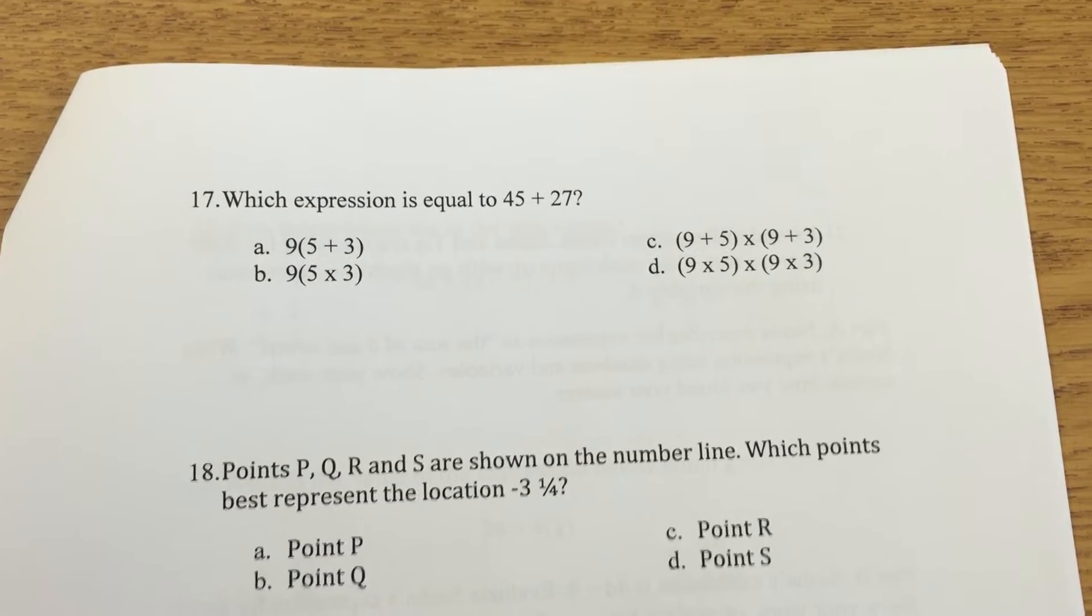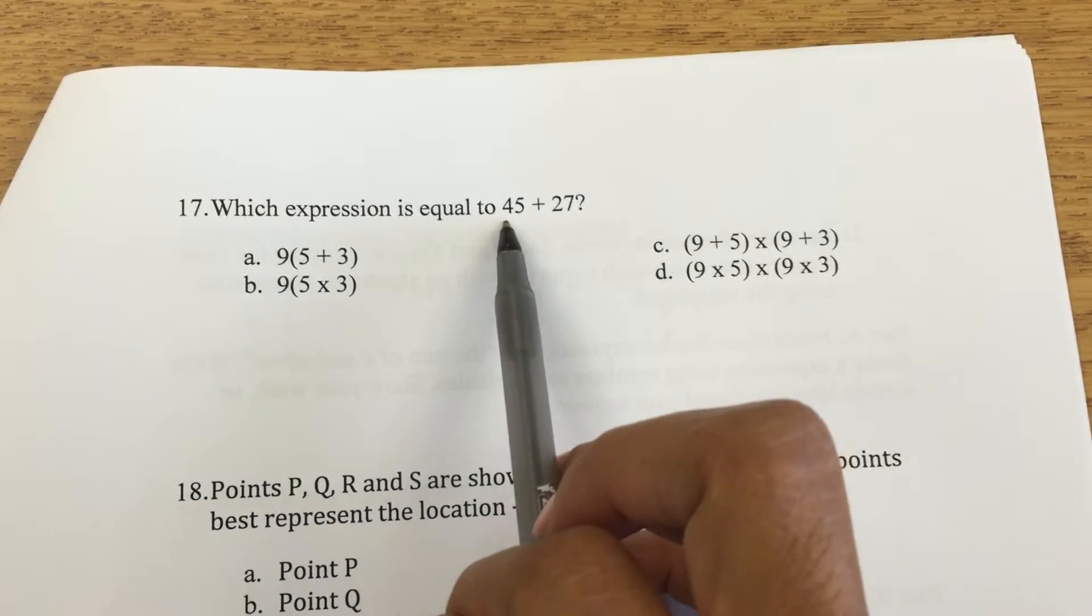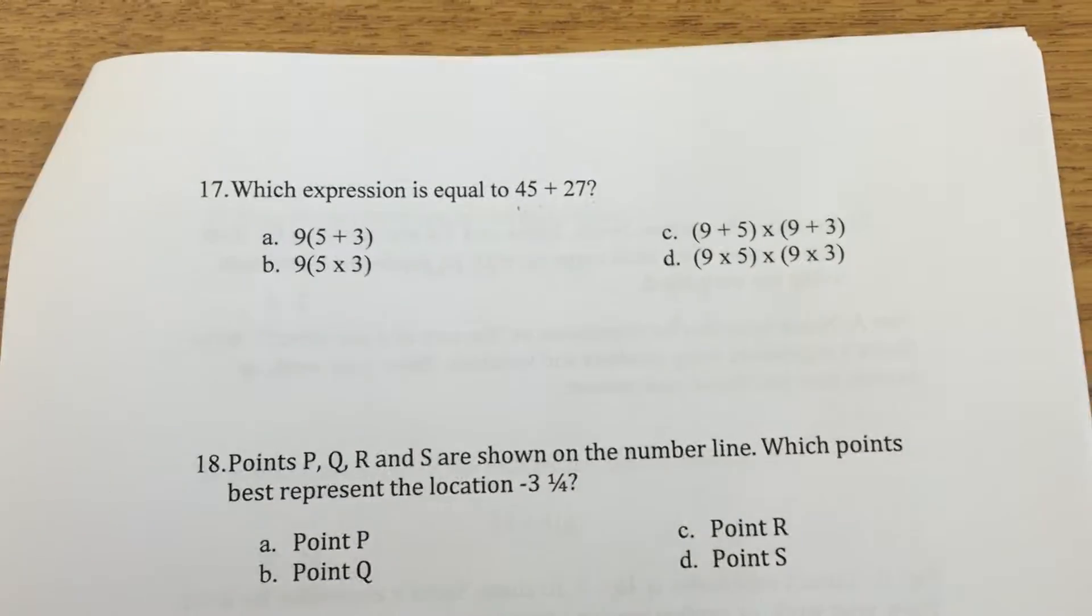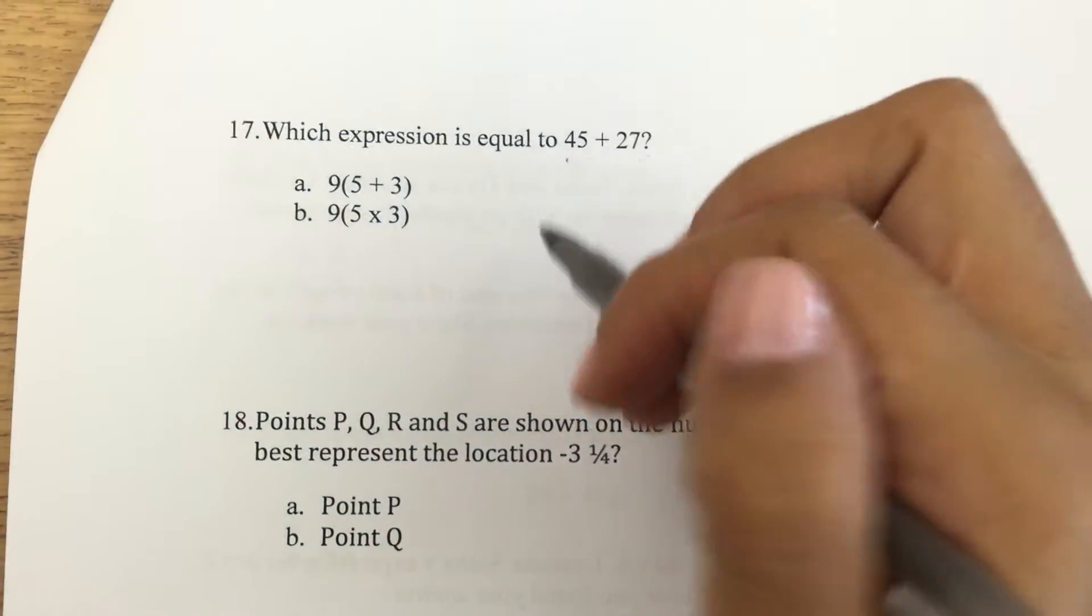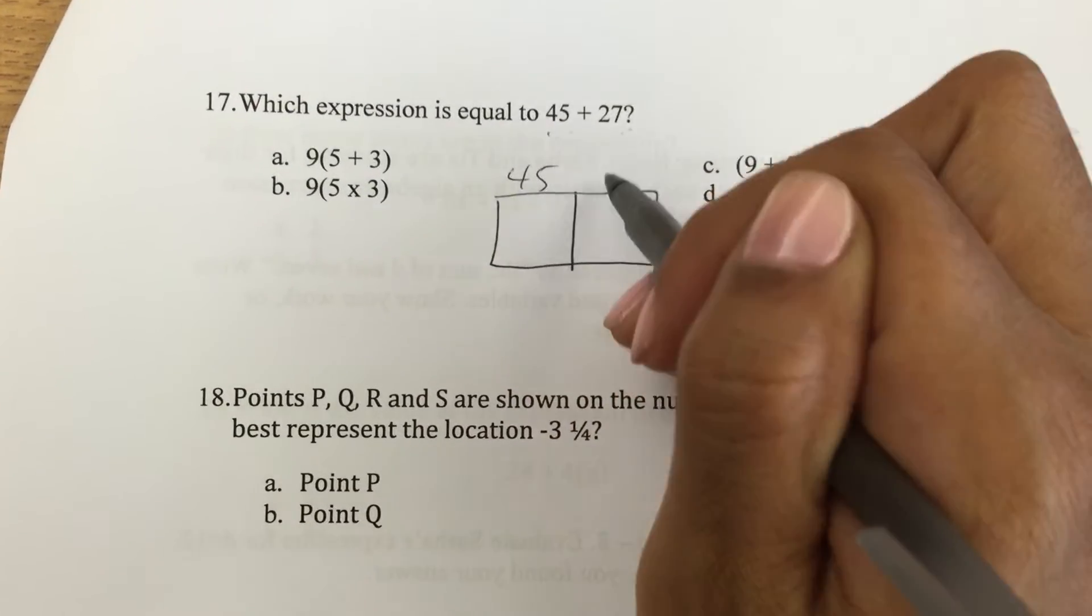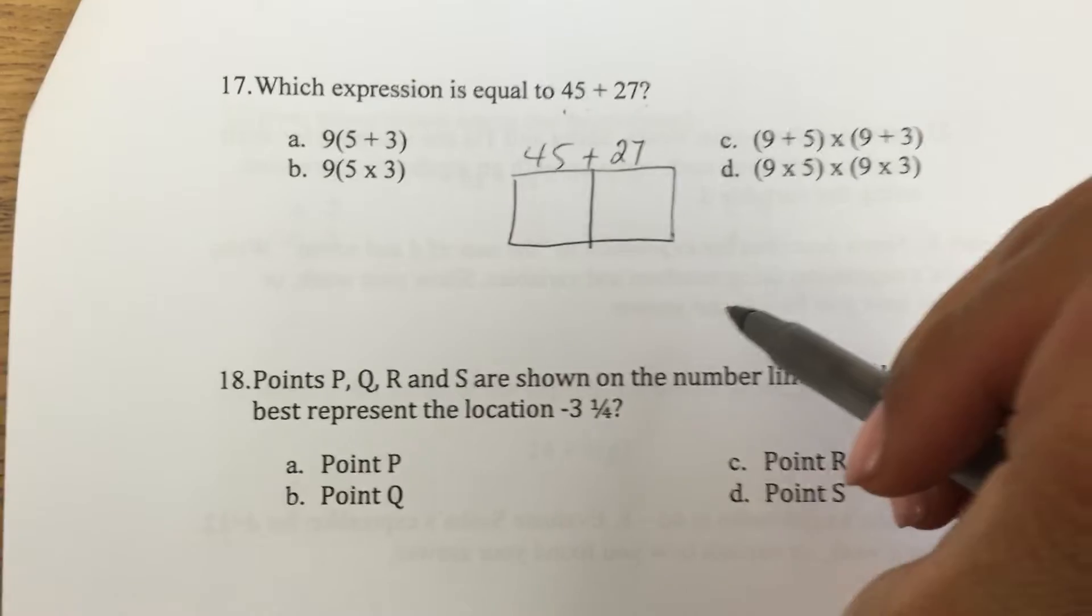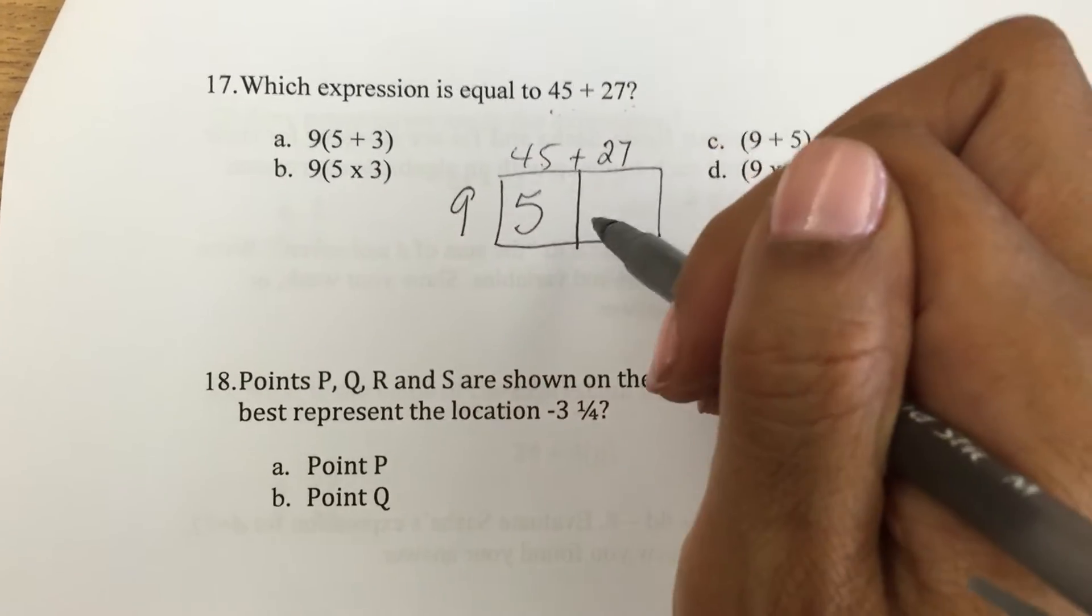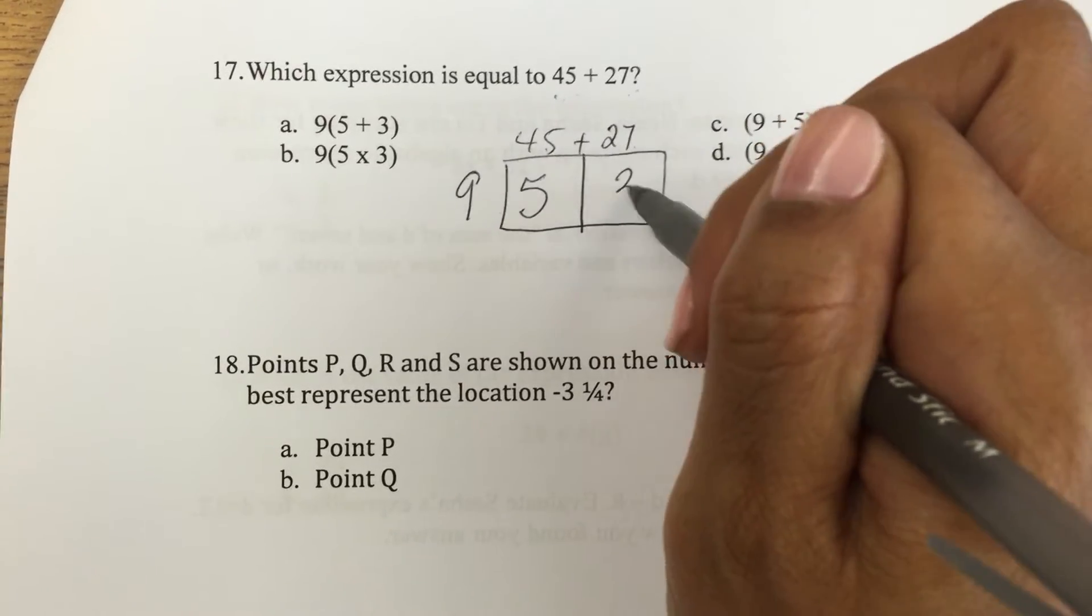Okay guys, here's part two of our test from today. So which one of these is the same as 45 plus 27? Just looking at it, I know it's a factoring problem, so I'm going to start with an area model. And I actually know that 9 can go into both of these numbers. 9 can go into 45 five times, and 9 can go into 27 three times.